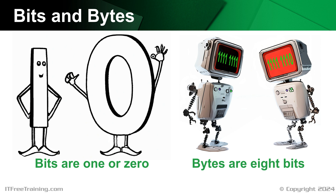Eggs are sold in cartons because it is more efficient to do it this way. Just like eggs, data is stored in bytes because it is more efficient. If you go back to the early days of computing, different data sizes were tried. However, the byte became popular because a single character fits nicely in a byte with some space to spare. Thus, a byte became the basic building block used in computers.